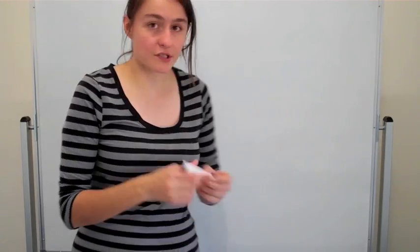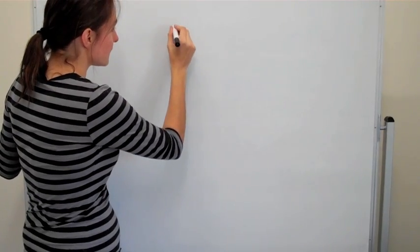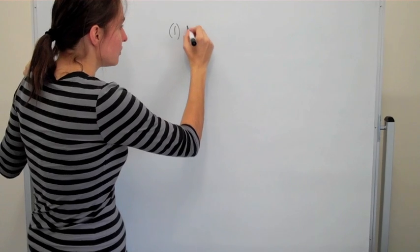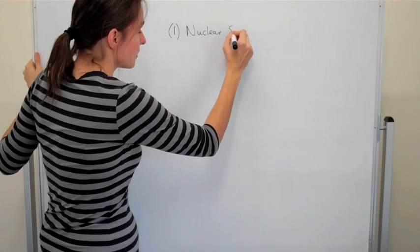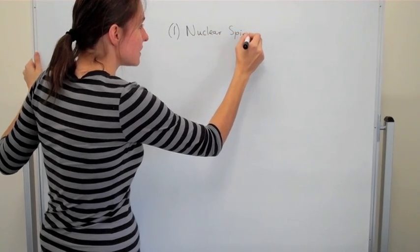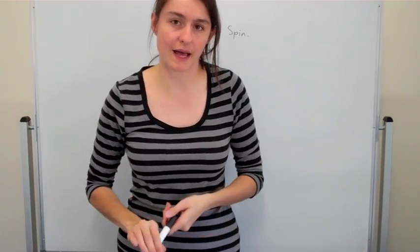So the first thing that we're going to have to consider in NMR is the definition of nuclear spin. Nuclear spin is the basis of NMR, is what makes NMR actually possible.